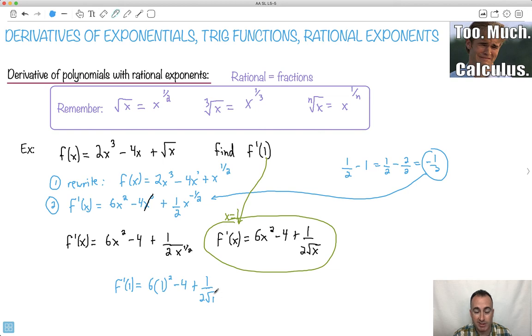What's the square root of 1? It's just 1. So that's kind of nice. So let's see, 1 squared here is 1. 1 times 6 is just 6. So 6 minus 4. And let's see, plus 1 over 2 times square root of 1, which is just 1. So it's just 1 half.